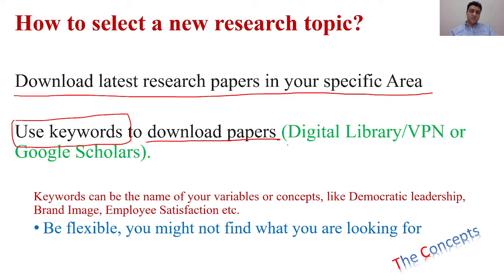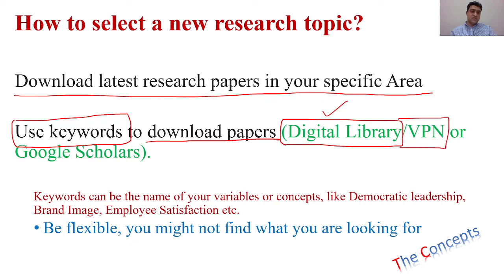There are multiple options for downloading papers. Most students and researchers use the digital library which their university has bought, as it has a lot of free articles already available. Due to COVID, many universities have also shifted their digital library to a VPN system you can use from home. Even if you do not have these facilities, you can always go to Google Scholar and download papers from there, though you will not get all the papers you want.